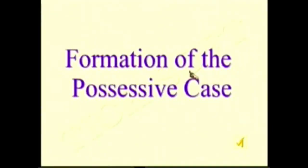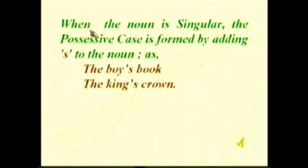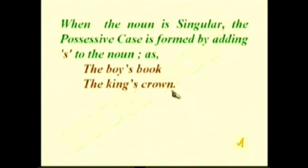Formation of the possessive case: when the noun is singular, the possessive case is formed by adding apostrophe-S to the noun, as 'the ball's book' or 'the king's crown.' Note the apostrophe. 'The ball's book' means the book belongs to the ball; 'the king's crown' means the crown belongs to the king.